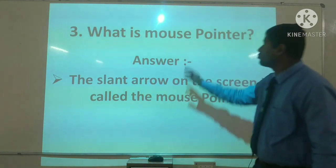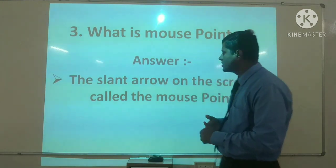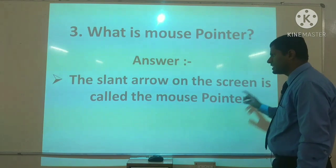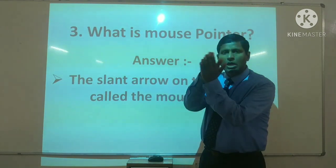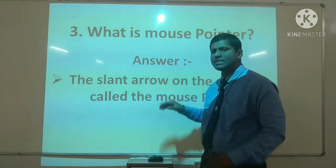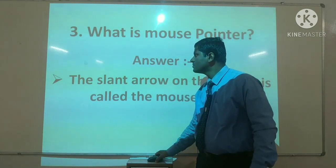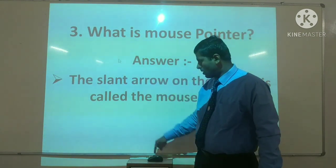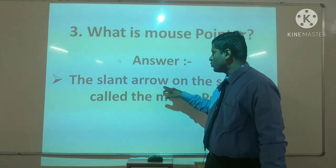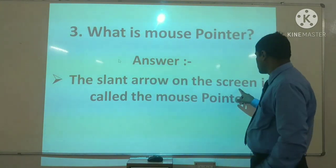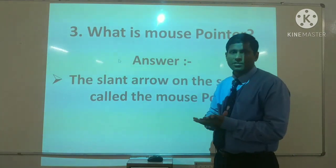What is a mouse pointer? Question third: mouse pointer क्या होता है? The slant arrow on the screen is called the mouse pointer. Slant means थोड़ा टेड़ा, and arrow means एक तीर। यह देखिए — mouse चला रहा है, the slant arrow on the screen is called the mouse pointer.